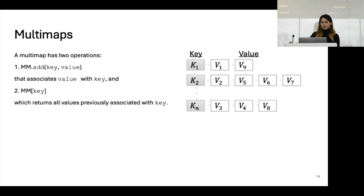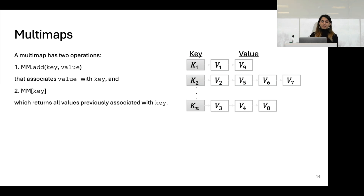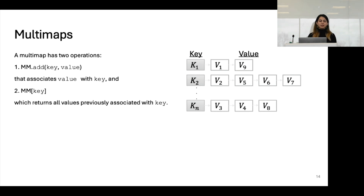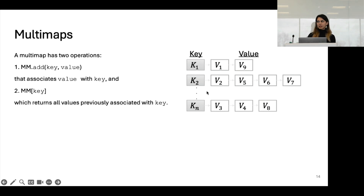The other notion we need is multi-maps. Multi-maps are data structures with two operations: first, an add function that adds a key-value pair to the data structure; and second, when inputting a key, we get back all values associated with that key. Multi-maps have a one-to-many relationship.